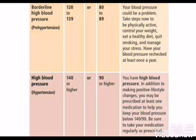The deoxygenated blood that comes back from the body to the right side of the heart is then pumped through the lungs, where it picks up oxygen. The oxygenated blood then travels to the left side of the heart and is pumped to the rest of the body. Diastole and systole affect a person's blood pressure differently.